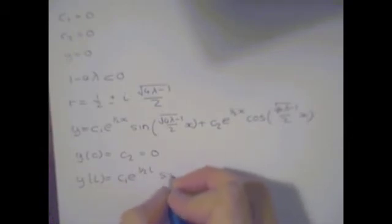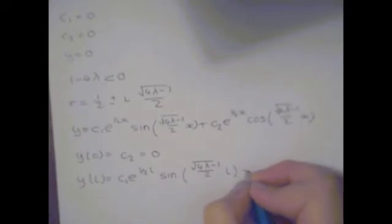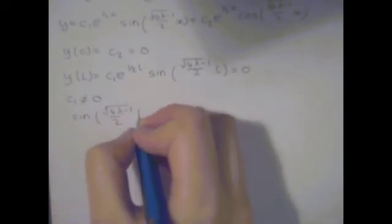This gives the simplified solution y = c₁e^(x/2)sin(√(4λ-1)/2 · x), and applying y(L) = 0 gives c₁e^(L/2)sin(√(4λ-1)/2 · L) = 0. In order for this not to give a trivial solution, we assume c₁ ≠ 0, which means sin(√(4λ-1)/2 · L) = 0.